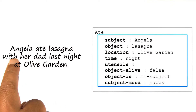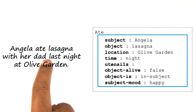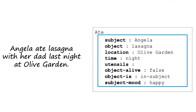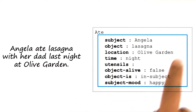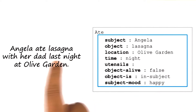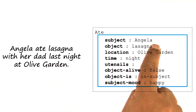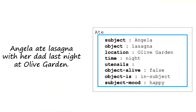Before we worry about what to do about the information that Angela had lasagna with her dad, let us look at some of the properties of frames. There are slots, and you can put fillers for each of the slots. Each filler may come from a range of values. Some of the slots have default fillers. You can see how some kind of common sense inferences become possible from these default fillers for the slots.